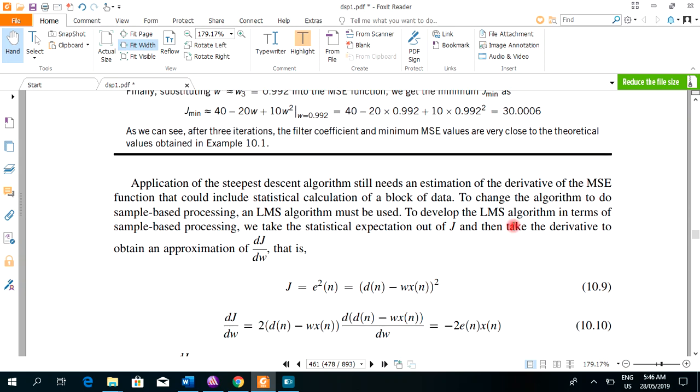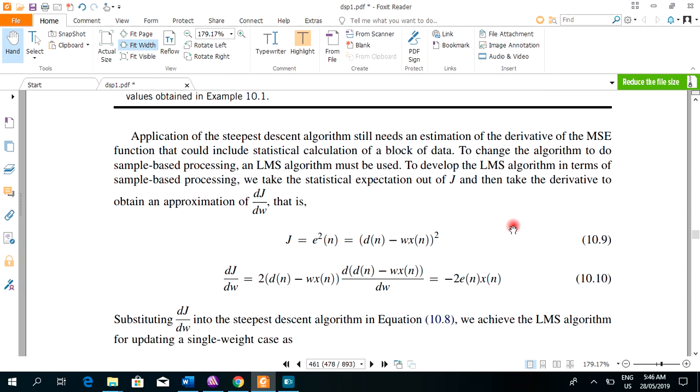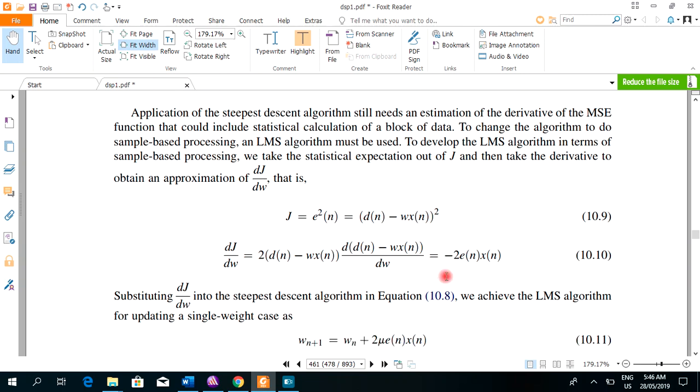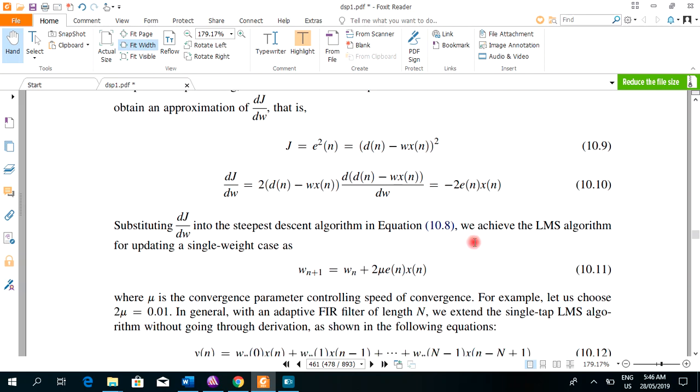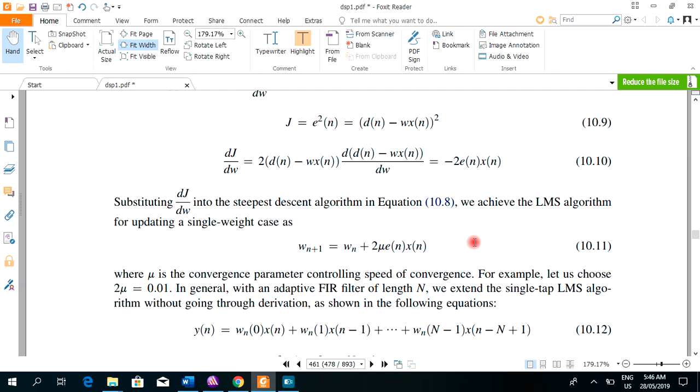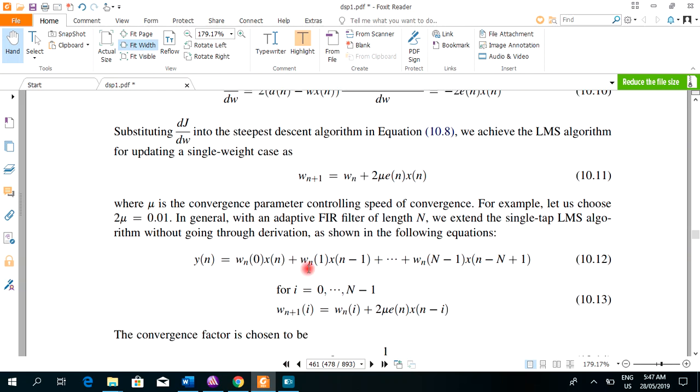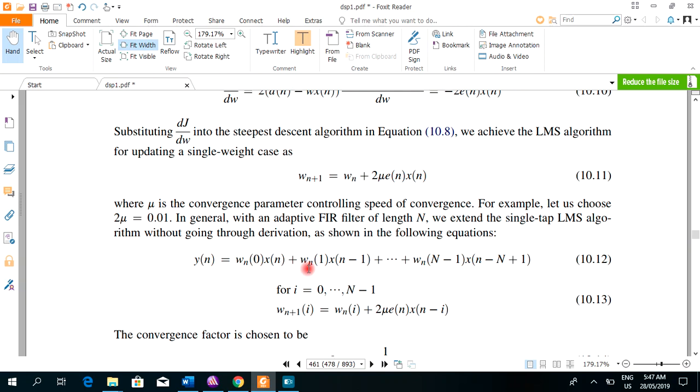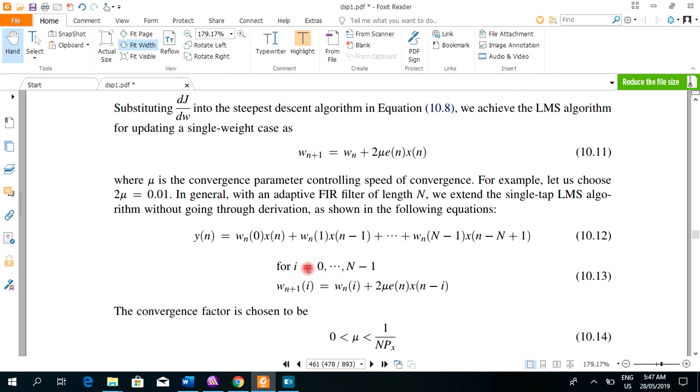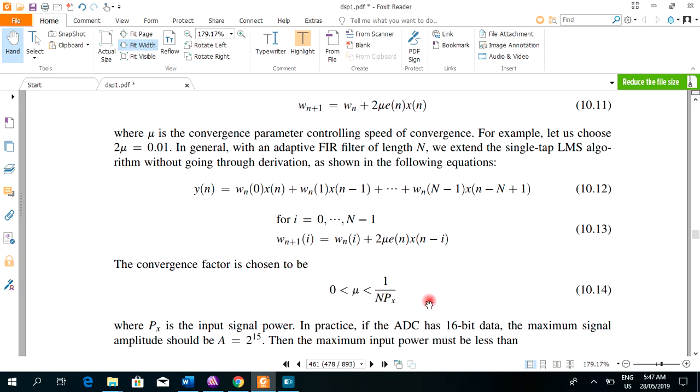Application of steepest descent algorithm still needs an examination of derivatives. We can further simplify it as the derivative comes out to be minus 2 error into input signal. And the final weight update will be W of N plus 2 mu E of N, X of N and the output of the filter will be the weighted sum into the input. And the convergence factor is chosen in between 0 and 1 over N, X.